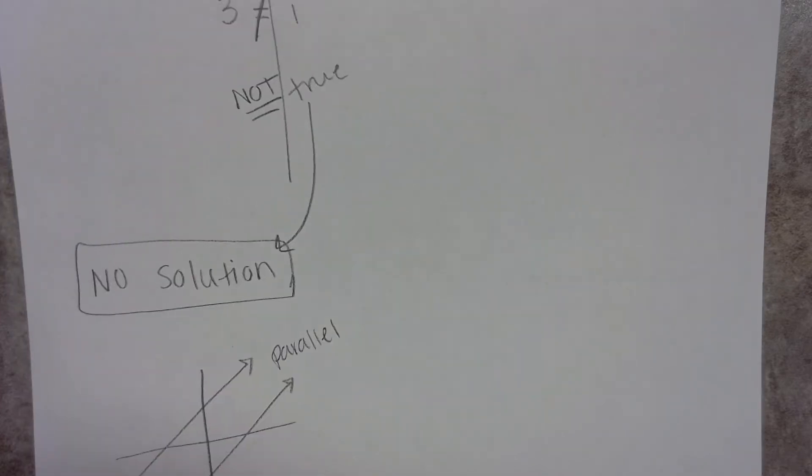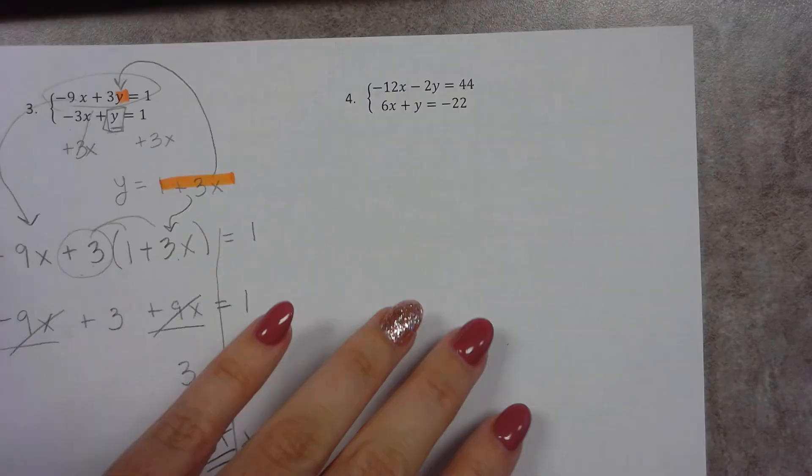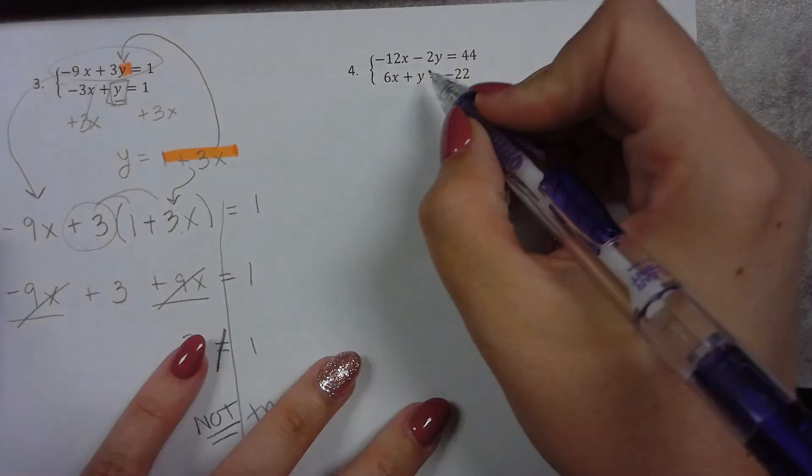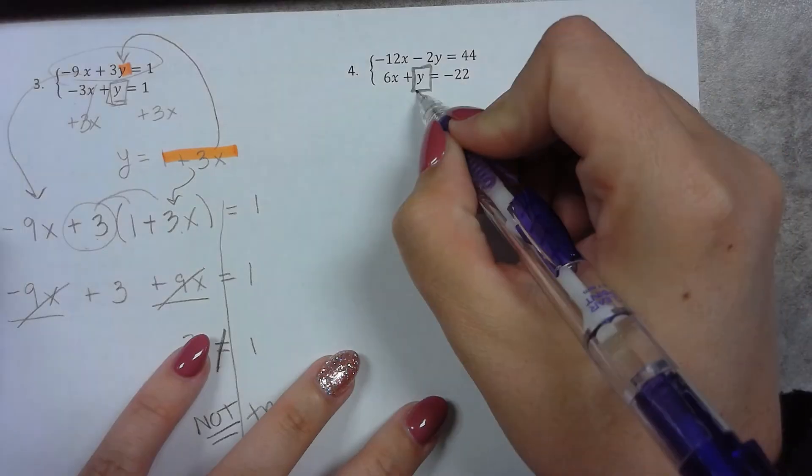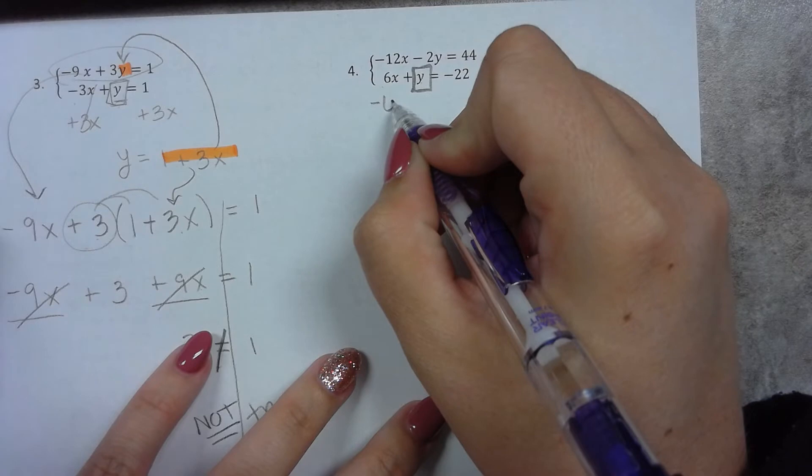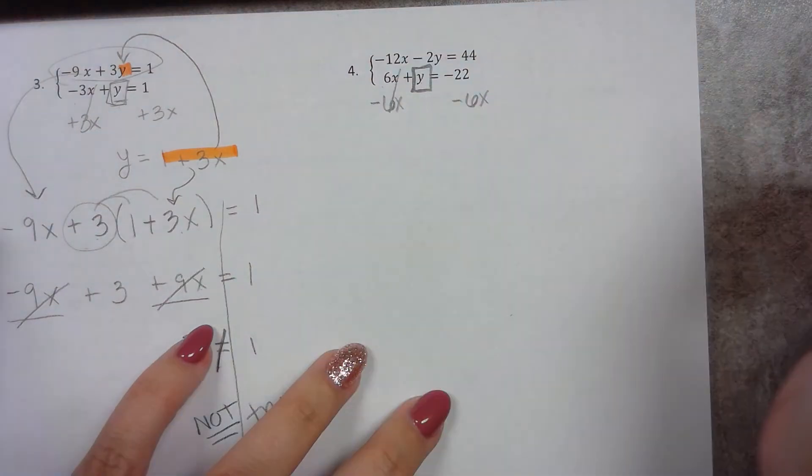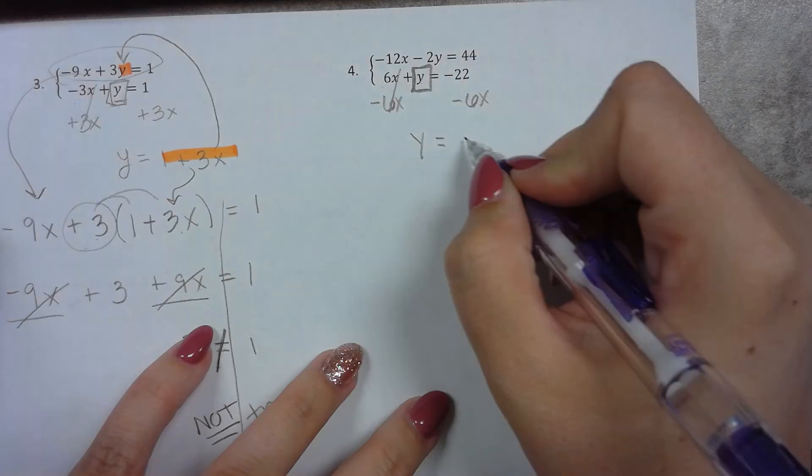Okay, let's do the last problem now. So number four, same thing, we're going to start by trying to get this y here by itself. So to get this y by itself, I want to move the 6x by subtracting 6x to each side. When I do that, I get y equals negative 22 minus 6x. Now that I have that...